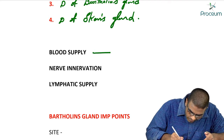Bartholin's cysts form when the duct is blocked, causing secretions from the gland to accumulate and form a cyst. Bartholin's cyst is the most common cyst of the vulva.